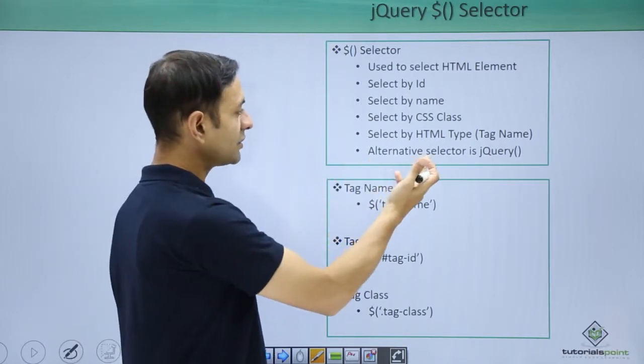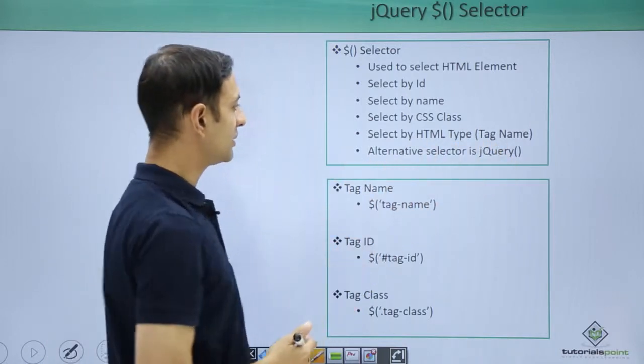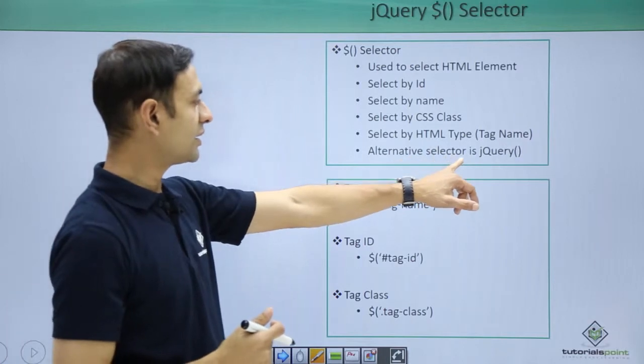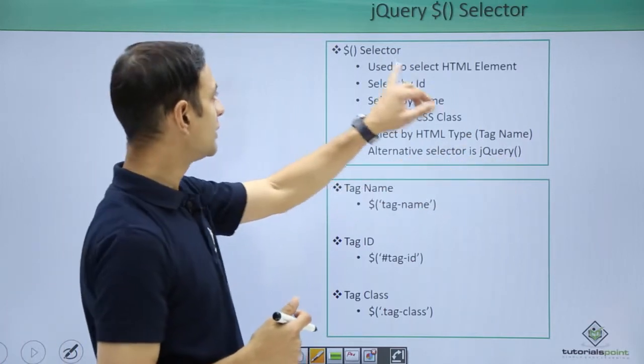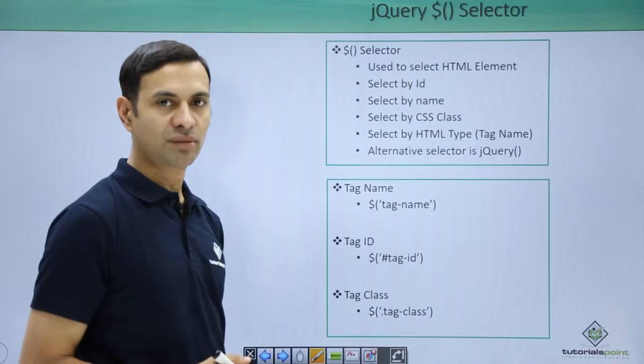Even we have alternative selector in jQuery bracket. This alternative selector is used when your dollar is being occupied by some other library.